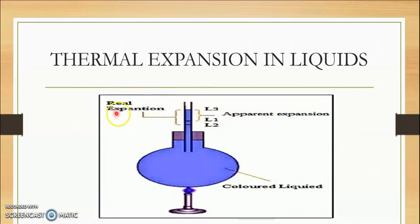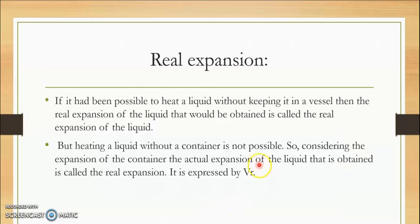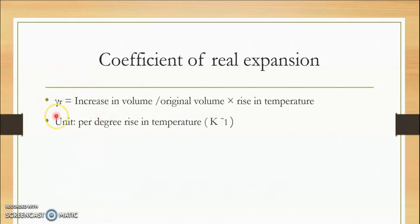After the container heats up and expands, the rise in liquid level is called the real expansion, denoted Vr. Moving forward, the coefficient of real expansion is gamma-r, which equals the increase in volume divided by the original volume multiplied by the rise in temperature. The unit is per degree rise in temperature.